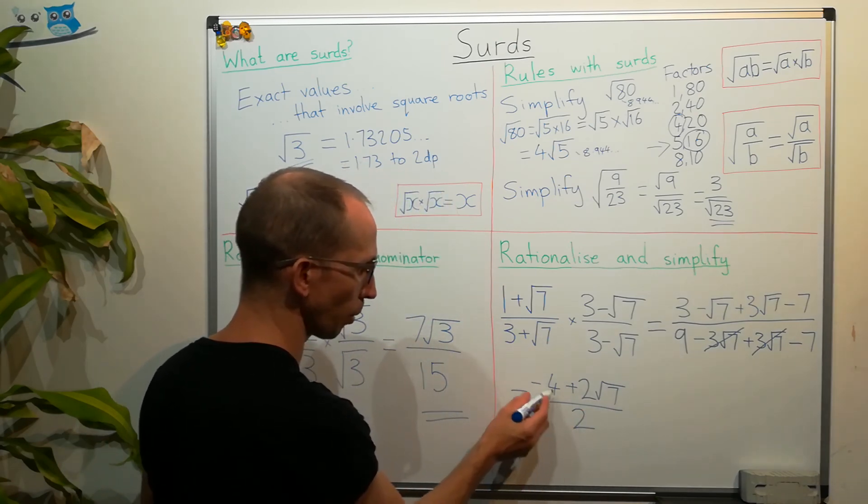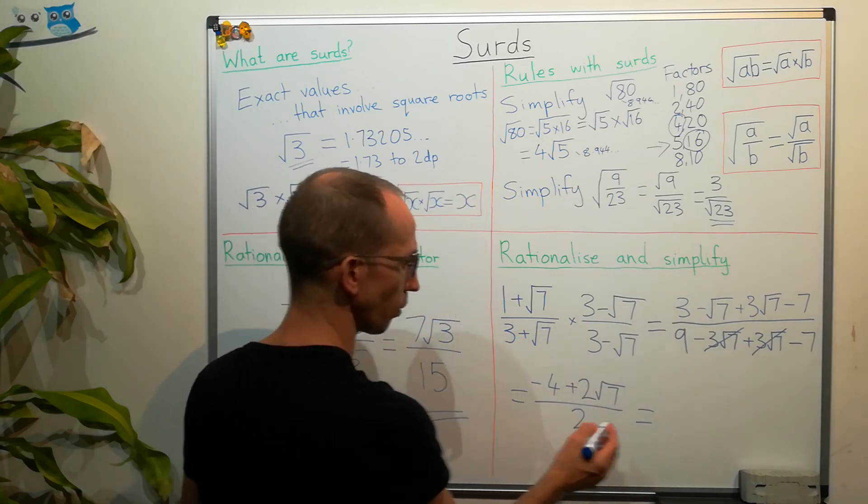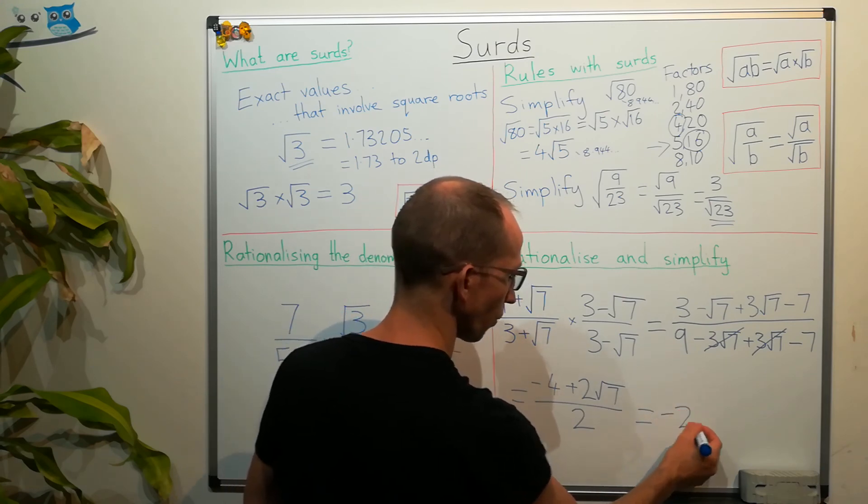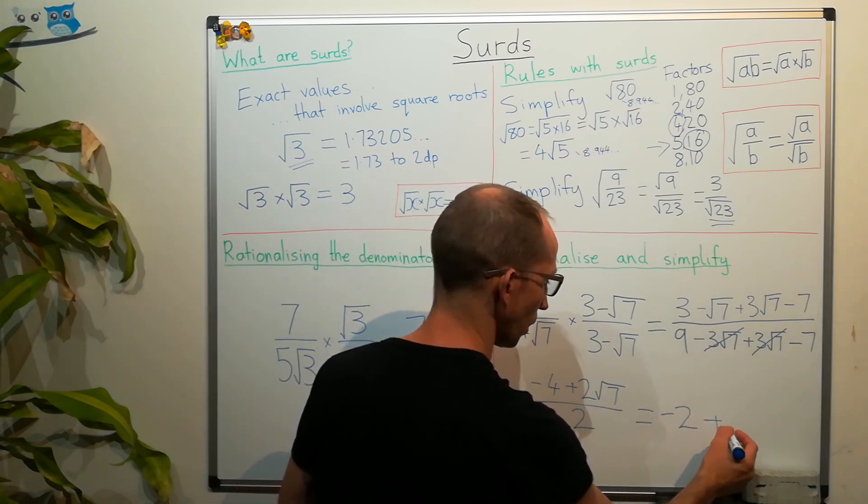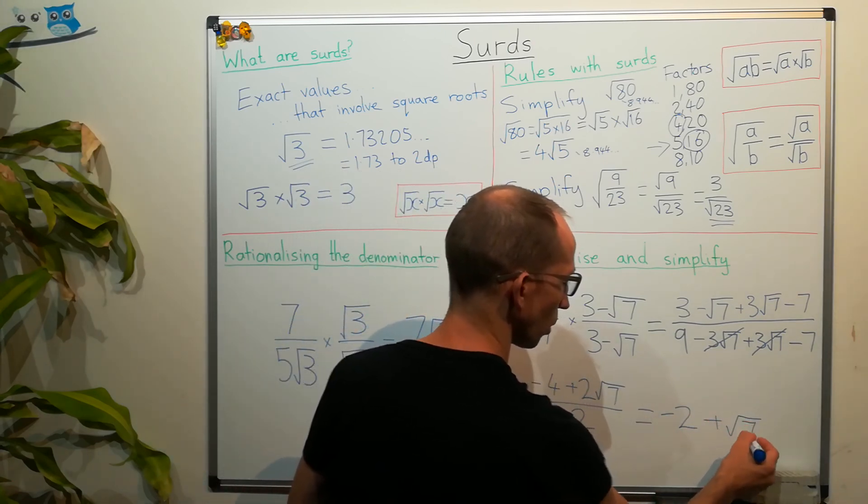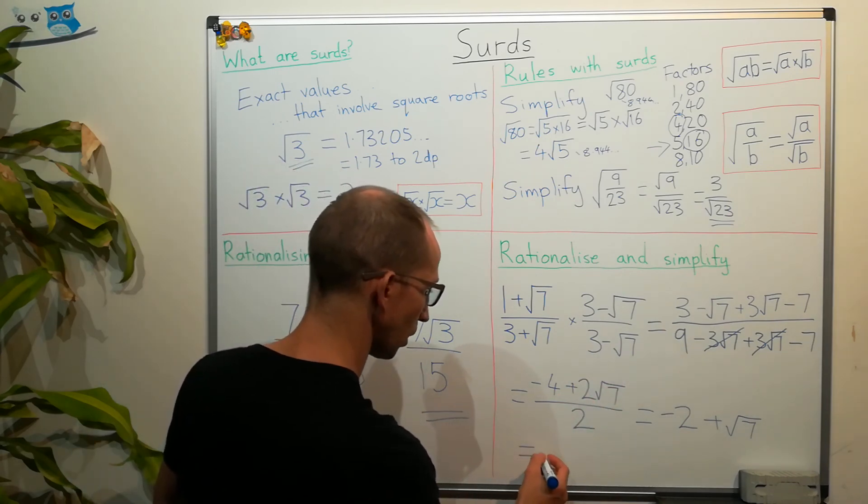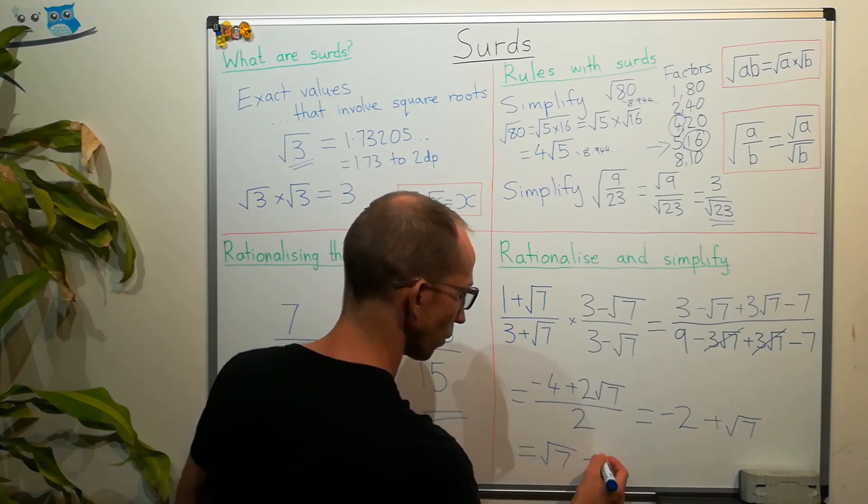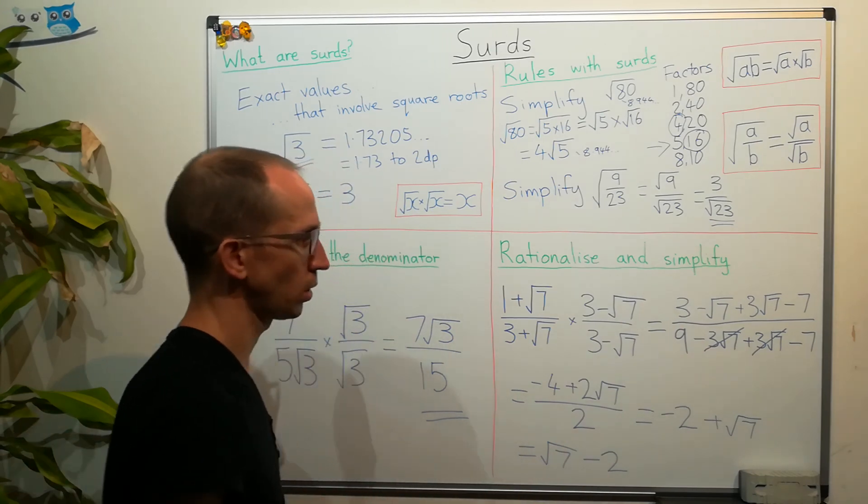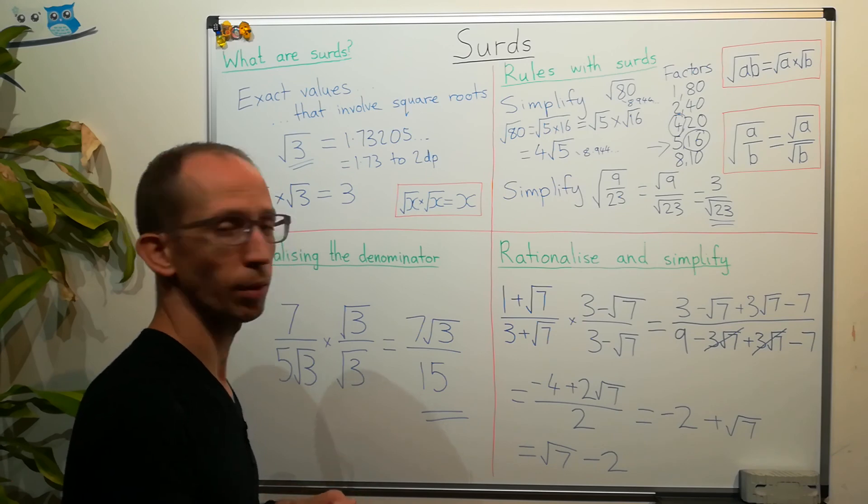And we can tidy this up a little bit because you can divide 2 into 4 and 2 into 2. So, minus 4 divided by 2, well, that's going to be minus 2. And the two's will cancel here, so we're going to have minus 2 plus root 7. And if you just want to make it a little bit tidier, you can put the positive value first. So, you've got root 7 minus 2. And that's what surds are, and how to work with them.